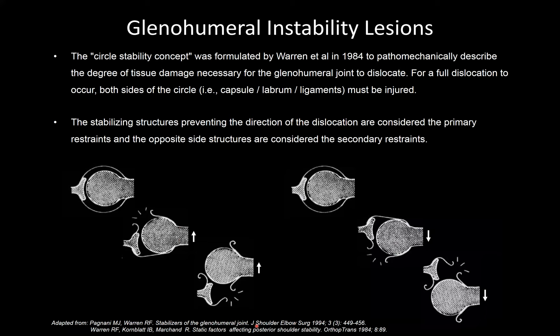The original diagrams from Dr. Warren's 1984 paper show the glenohumeral joint in anatomic alignment, then as the humeral head subluxes anteriorly with failure of primary anterior restraints, and finally fully dislocated anteriorly with additional failure of secondary posterior restraints. The opposite applies for posterior dislocation, where posterior structures fail first followed by anterior secondary restraints.